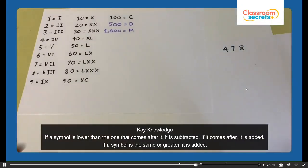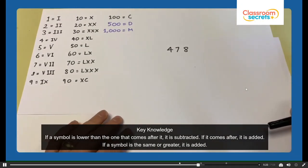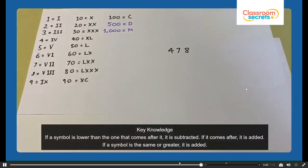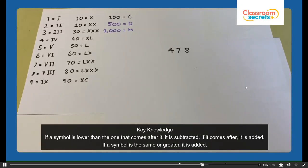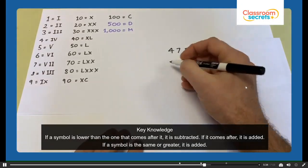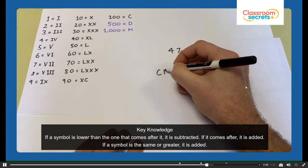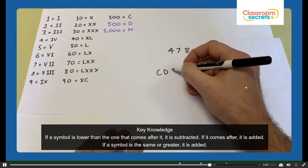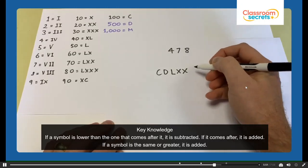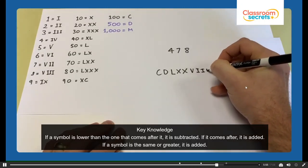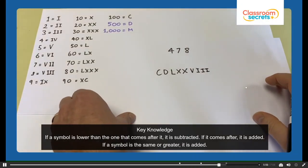Now have a go at 478. What would 478 be written in Roman numerals? We need the 400 first — that's 100 less than 500, so that would be CD. The 70 would be LXX — 20 more than 50. And the 8 would be 5 and 3 more, so VIII. So 478 is CDLXXVIII — quite a long one there.